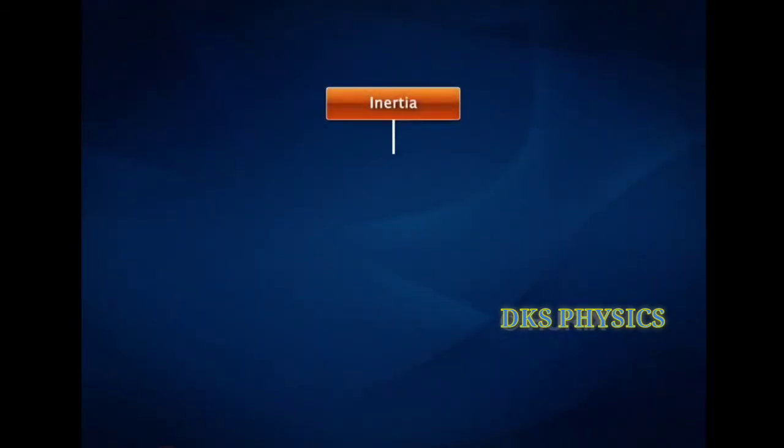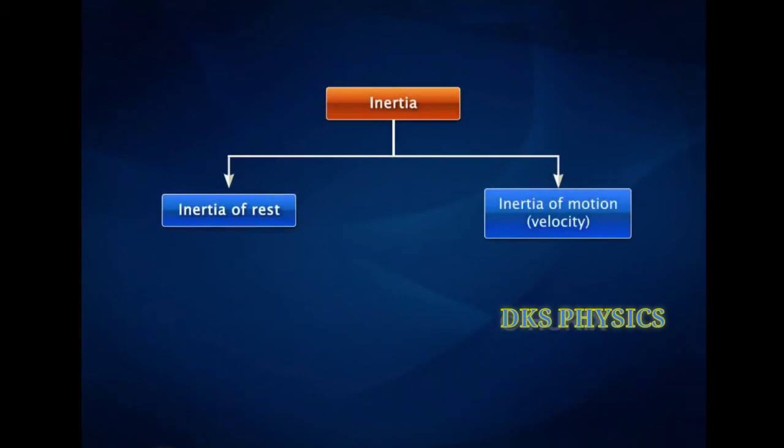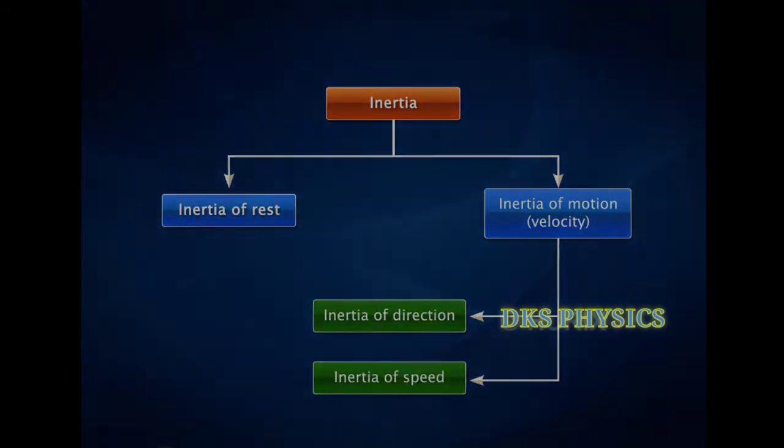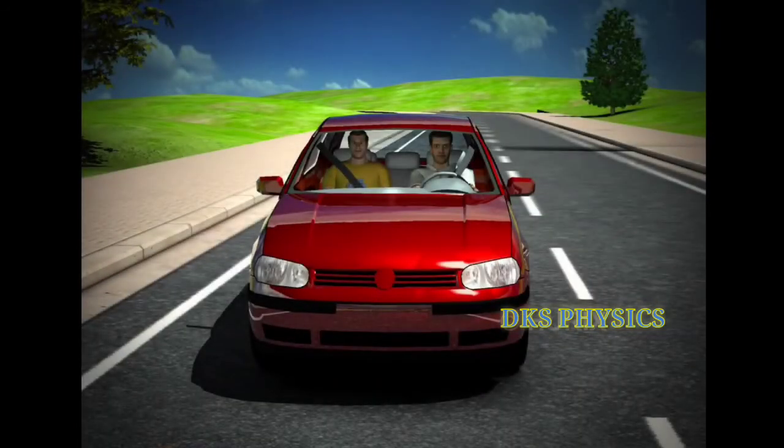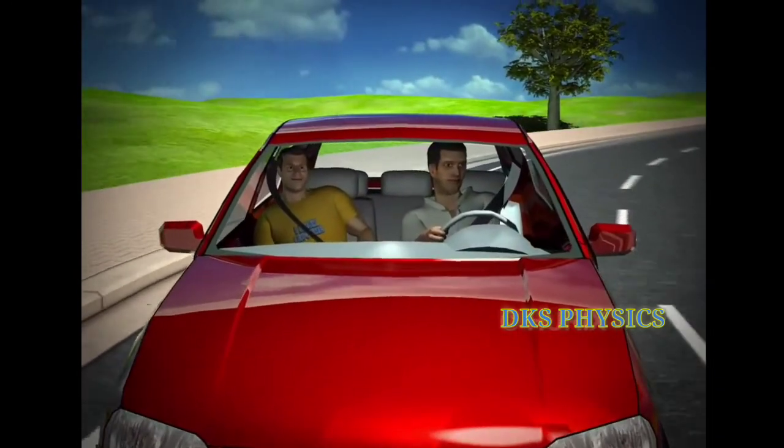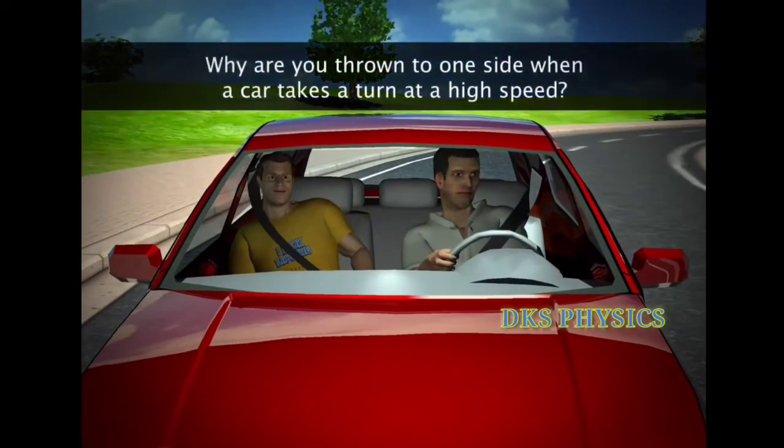So far, we have considered inertia in terms of rest or the speed of an object. But velocity refers to direction as well as speed. When a car takes a turn at a high speed, you are thrown to one side. Why does this happen?